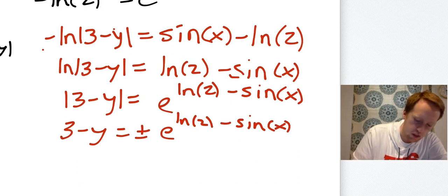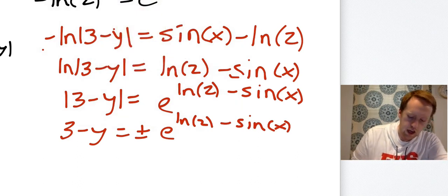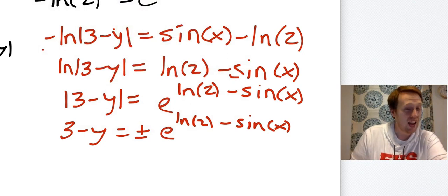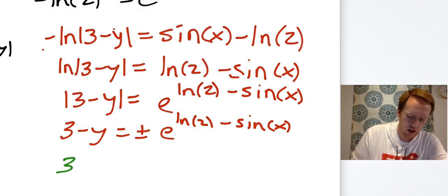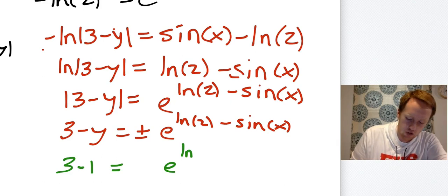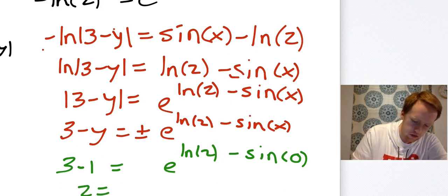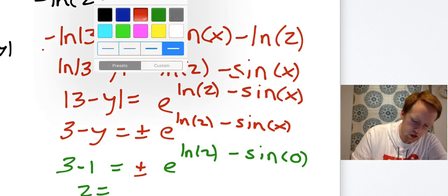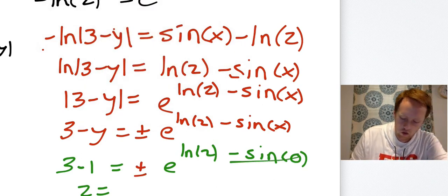So what I'm going to do to figure out which one it's supposed to be is I'm going to plug in the initial condition again, and it feels like, oh my gosh, why do I keep doing this? But we need to so we can figure it out. So 3 - 1 = e^(ln(2) - sin(0)). So that's 2 equals 2 equals, well this goes away, right?